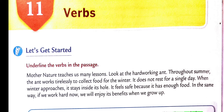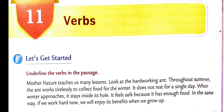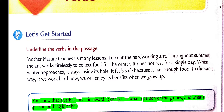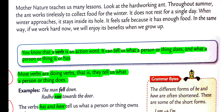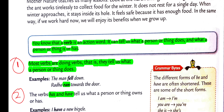Welcome back students. In today's class we are going to discuss what are verbs. As we all know, verbs are action words — verbs suggest what the subject of a sentence is doing. The definition given here is that a verb is an action word; it can tell us what a person or thing does, what a person or thing is, or has. The basic function of a verb is telling us what a thing or person is doing, what a person is, and what a person has.